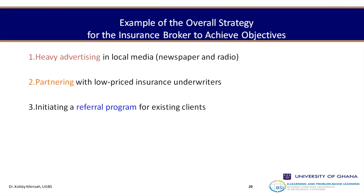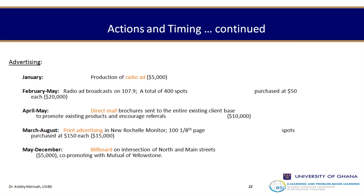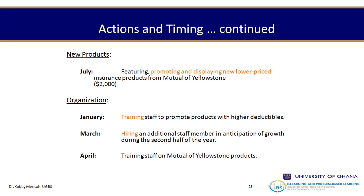The overall strategy for the insurance broker to achieve these objectives includes: heavy advertising in local media such as newspaper and radio; partnering with low-priced insurance underwriters; and initiating a referral program for existing clients, including brokerage and agency arrangements. Actions and timing specify when each particular activity will take place — for example, presenting insurance policies to customers first, followed by call-in campaigns for those with higher deductibles, then partnering activities in July — timing each action that will drive results.